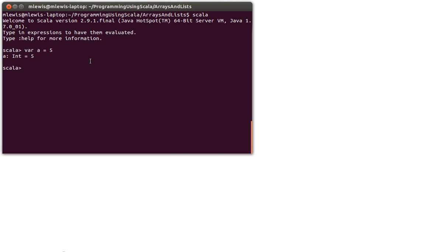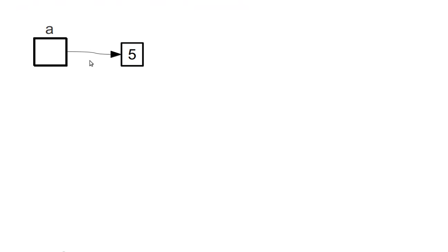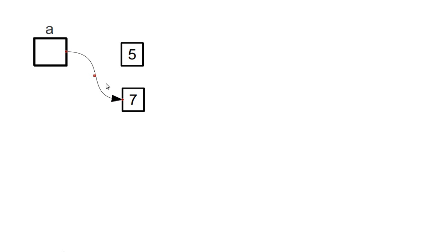For example, if I were to now say a equals 7, what that's doing is it's not changing the value in this box. Instead, it's making a new box which has the value 7 in it. And because a is a var, it can change the arrow. If you declare something as a val, you can't move the arrow. So the difference between val and var is whether or not you're allowed to move the arrow — the reference that the variable points to. That's the only difference. It has nothing to do with the contents of these boxes. Val versus var is whether or not you can move the arrow.